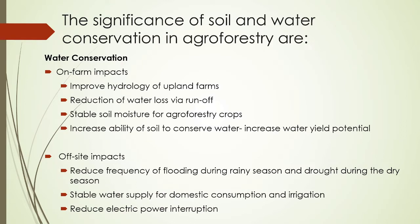Water conservation on-farm impacts include: improved hydrology of upland farms, reduction of water loss via runoff, stable soil moisture for agroforestry crops, increased ability of soil to conserve water, and increased water yield potential. Both small and large scale vegetable and crop farms rely on adequate water throughout all growth stages of plants. By doing water conservation — for example, drainage canals — it provides soil moisture that is good for crops. This is very useful for farmers and students as it helps increase the soil's ability to conserve water.